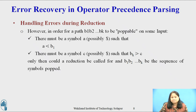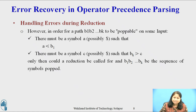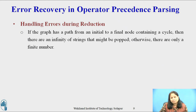Paths consisting of a single node are also possible. However, in order for a path B1, B2, up to Bk to be poppable on some input, there must be a symbol A such that A yields precedence to B1, and there must be a symbol C (possibly dollar) such that Bk takes precedence over C. Call Bk 'final' — only then could a reduction be called for and the sequence B1, B2, up to Bk be popped. If the graph has a path from an initial to a final node containing a cycle, then there are an infinity of strings that might be popped. Otherwise, there are only a finite number.